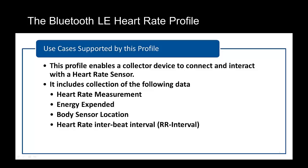The heart rate monitor can supply a whole range of data within this profile, including the instantaneous heart rate itself, a measure of energy being expended — which would require more configuration to map a rate to energy expenditure — an indication of how the sensor is connected to the body and if it is in contact with it, as well as a stream of data that can be used to determine the time spacing between human heartbeats. Some of these are used in specialized heart rate monitors, and we're interested only in the instantaneous heart rate measurement in this particular example.